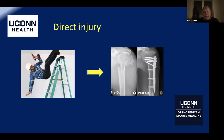Sometimes it's easy. Somebody falls off a ladder, gets a proximal humerus fracture, needs a plate — there's clearly a direct causal connection between the work-related event and the injury being treated. Usually if it's this simple, you're either asking other questions or they're not even asking for an IME.